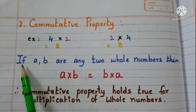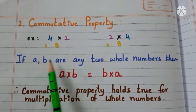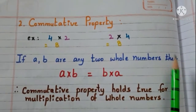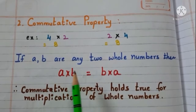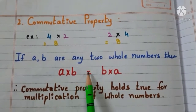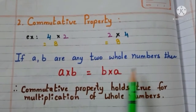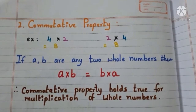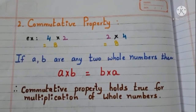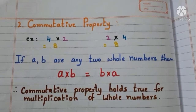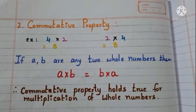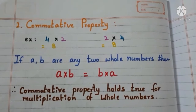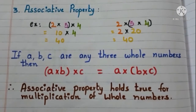Let us say, if A and B are any 2 whole numbers, then A into B is equal to B into A. Therefore, we can conclude that commutative property holds true for multiplication of whole numbers.